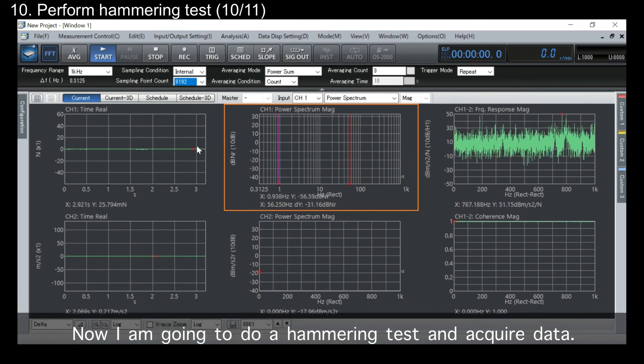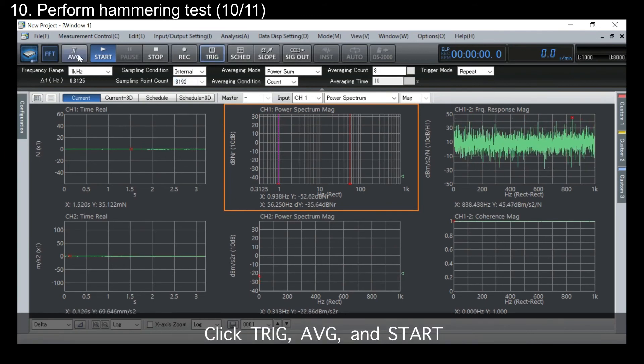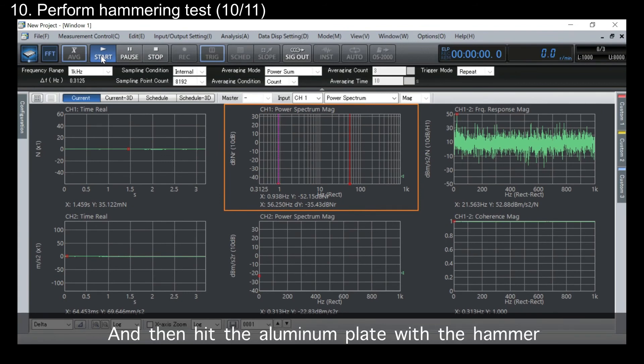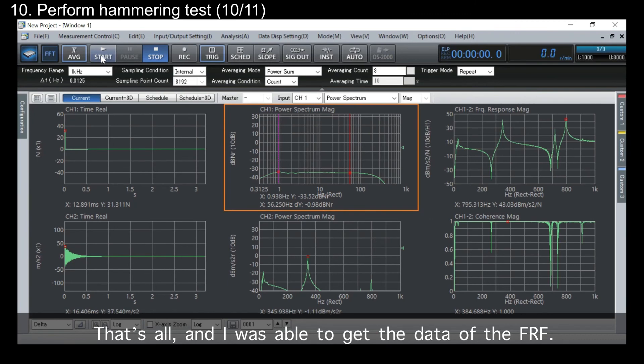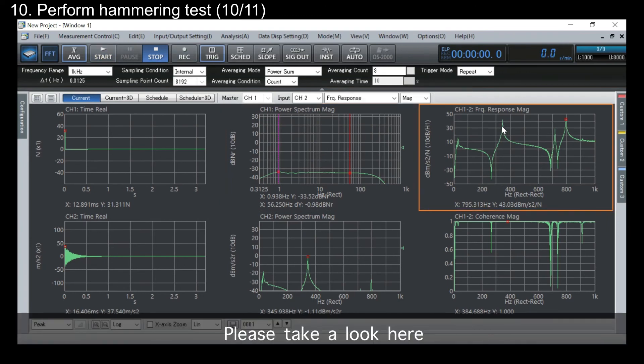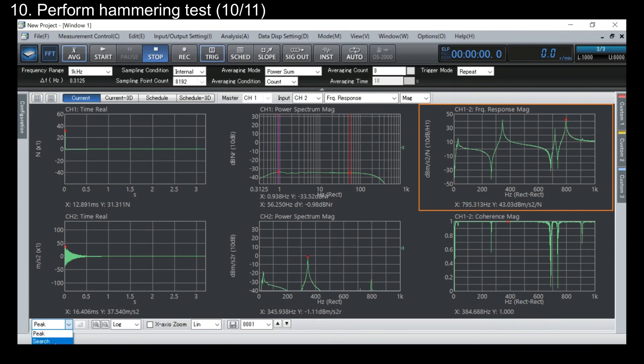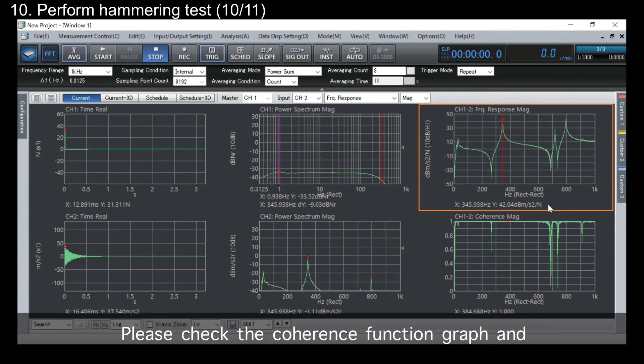Now, I'm gonna do a hammering test and acquire data. Click trigger, average, and start. And then hit the aluminum plate with the hammer a set number of times. That's all. And I was able to get the data of the frequency response function. Please take a look here. The peak part is the natural frequency of the aluminum plate. Please check the coherence function graph and confirm that it is close to 1. The closer it is to 1, the more causative the impact force and the response acceleration.